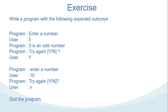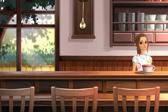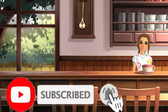I want you to try one exercise: write a program with the following expected outcome. The program will ask you to enter a number; you enter 5, and the program says '5 is an odd number.' Then the program asks 'Try again? Yes or No.' If you answer yes, it continues with the same question; if no, it quits. Please try to write the pseudocode and convert it to Java, and feel free to share your answer in the comments. I also have a video about do-while — it's a good idea to understand both while and do-while loops. If you learned something from this video, please subscribe and like for more videos. Thanks for watching.